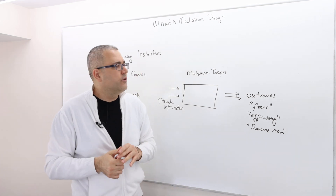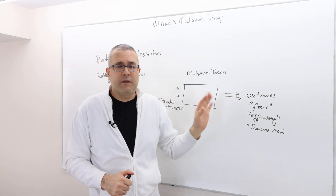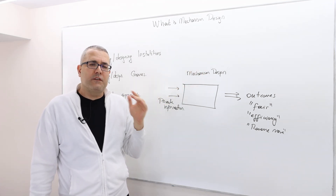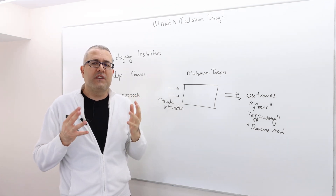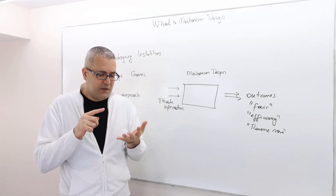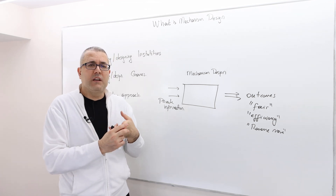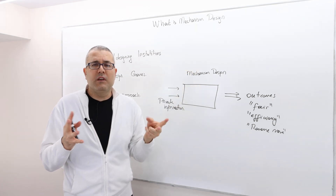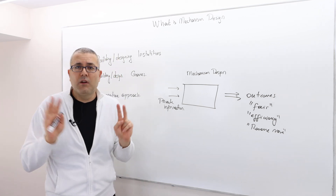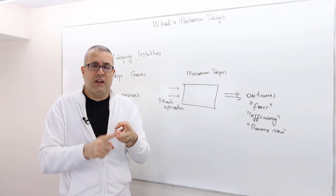If the mechanism designer knew all the information — the set of players, their strategies — well, the strategies are created by the designer, and the set of players is also known: you can restrict it to N players only. So the mechanism designer already has control of the strategies and the number of players.